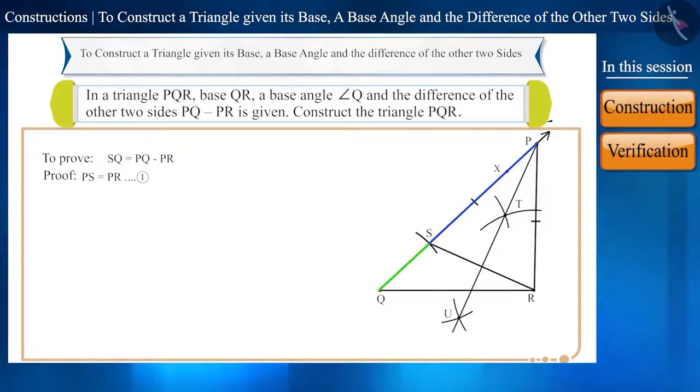And side PQ is formed by joining two line segments PS and SQ. Therefore, PQ is equal to PS plus SQ. And we can write it like this as well: SQ is equal to PQ minus PS.